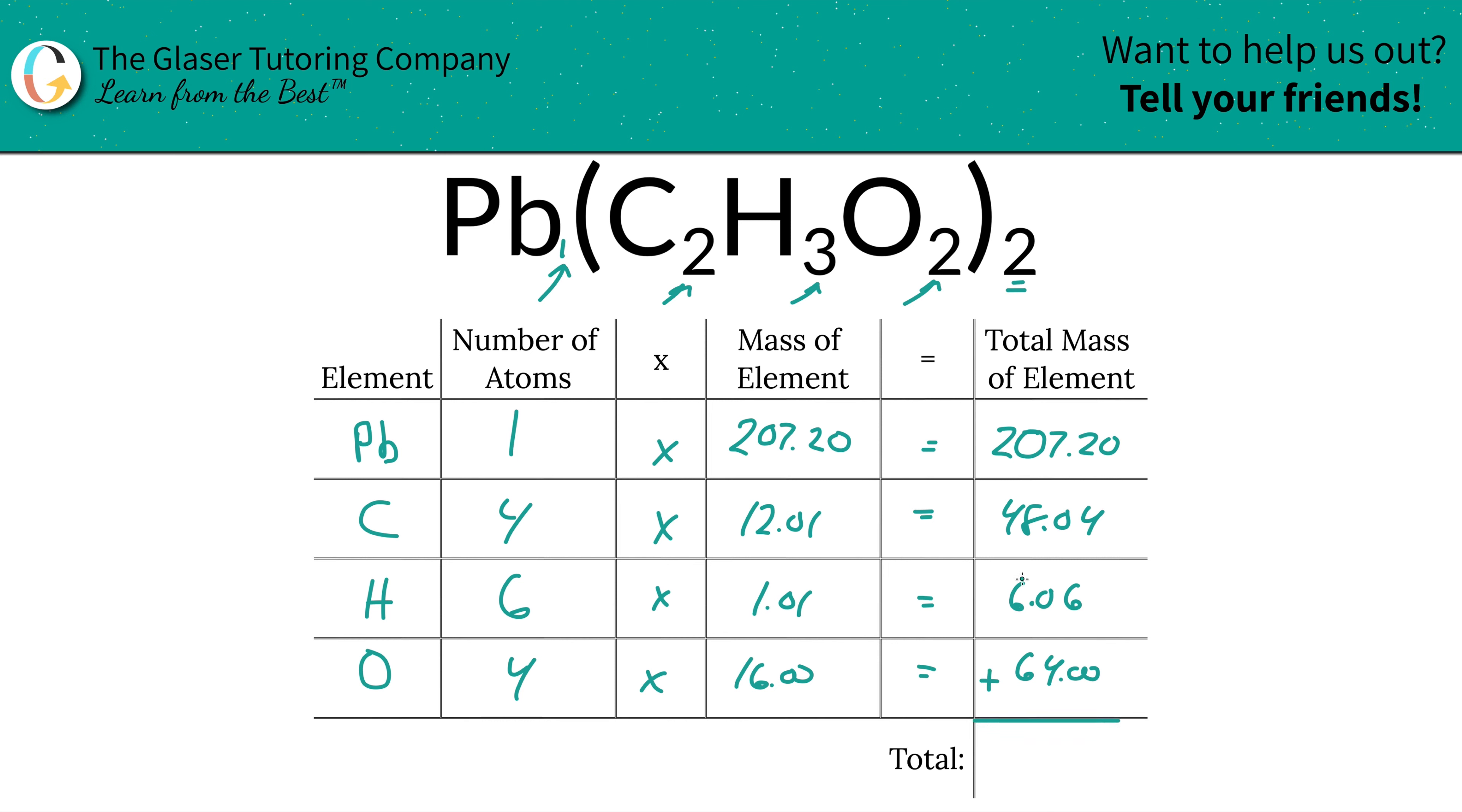Then the total mass of the compound now, easy as pi. Take a look. Just simply add this on up the column. That's it. So this is 325.30.